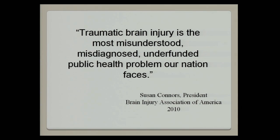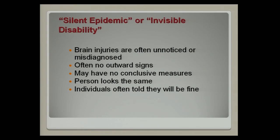It's interesting and important to know that traumatic brain injury is the most misunderstood, misdiagnosed, and underfunded public health problem our nation faces. This is from Susan Connors, president of the Brain Injury Association of America, 2010. It's considered to be a silent epidemic or an invisible disability. Brain injuries are often unnoticed or misdiagnosed because the patient is walking and talking, looks okay, they go home, and then they find they have problems.